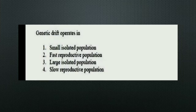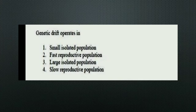The next question: Genetic drift operates in which type of population? The options are Small isolated population, Fast reproductive population, Large isolated population, and Slow reproductive population. The right answer is Option 1, small isolated population.